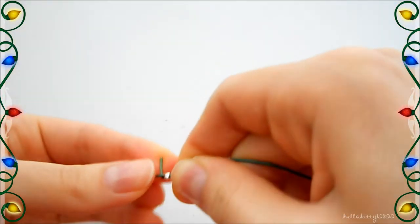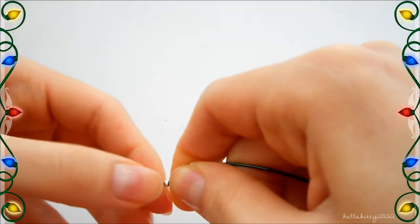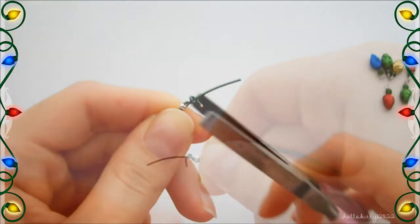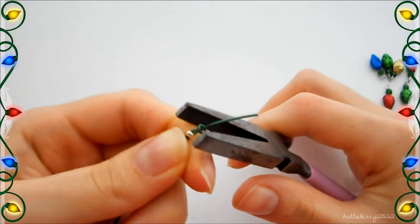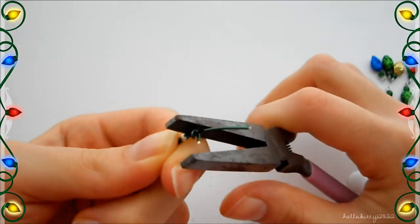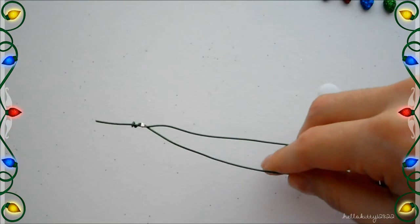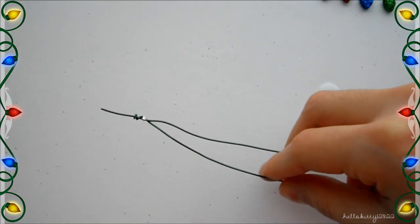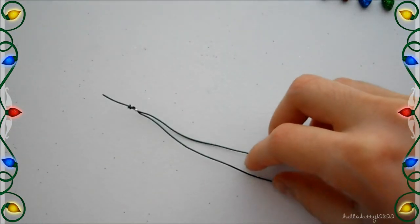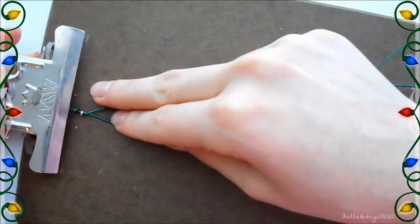Then for the shorter end of the wire, I'm just going to wrap that around. Use my flat nose pliers just to make sure that no wire is sticking out and might poke me later. So now I have something like this and I'm just going to take a small clipboard or you could use a regular size clipboard.